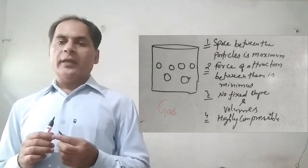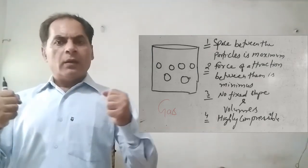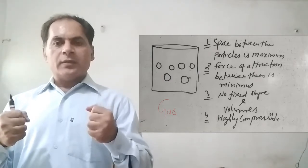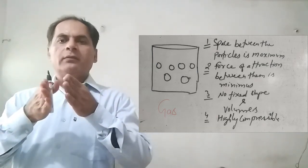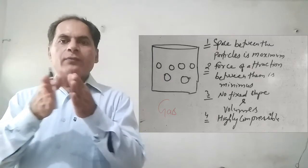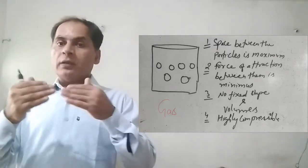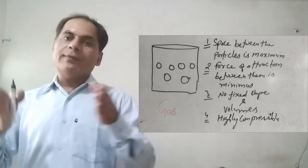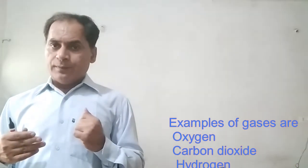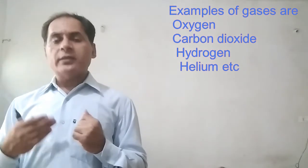The next point is compressibility of gas. Compressibility means if we compress the gaseous state of any substance — if a gas is occupying some space and we compress it, it will occupy less volume. So in the gaseous state, compressibility is high or maximum. It is because the space between the molecules is more, so this space can be filled by the molecules if we apply pressure. Examples of gases are CO2 (carbon dioxide), helium, hydrogen, and chlorine.